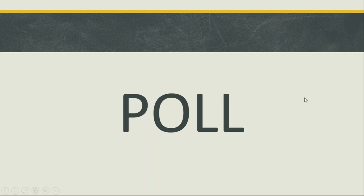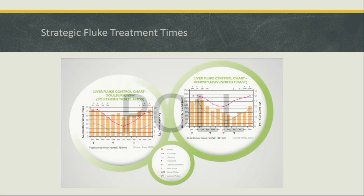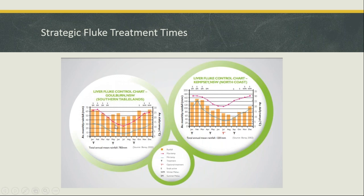That poll result works out perfectly for the next slide. The reason for that autumn drench — the two A's, April and August — is to knock out the liver fluke population as the snail starts going to sleep and hibernating in the mud. If we can knock out the population in autumn, then as we come into spring there should be very little contamination. That's also important if you're a spring calver with pregnant animals going through that time.